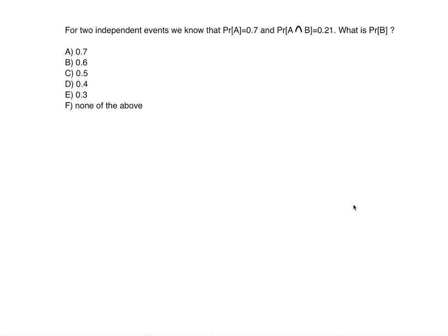So we're given that for two independent events we know that probability of A is equal to 0.7 and probability of A and B is equal to 0.21.